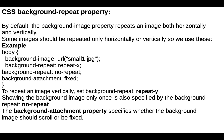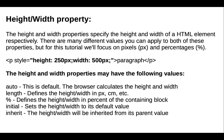Next is the height and width property. Height and width specify the height and width of an HTML element respectively. For this tutorial we will focus on pixels and percentages. Height and width properties may have the following values: auto, length, percentage, initial, and inherit. We can use any one of these.